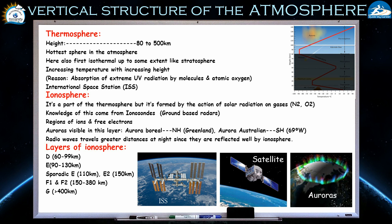In this layer you can also see auroras — extreme colorful lights visible in the atmosphere. Those formed in the northern hemisphere are called aurora borealis, and those in the southern hemisphere are called aurora australis. Another interesting fact is that radio waves travel greater distances at night because they are reflected more effectively by the ionosphere.